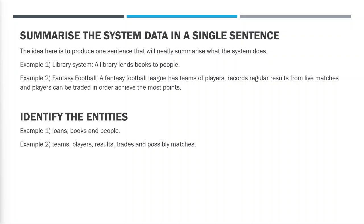Let's look at a couple of examples. A library system: a library lends books to people. So that would give us three entities — loans, books, and people.